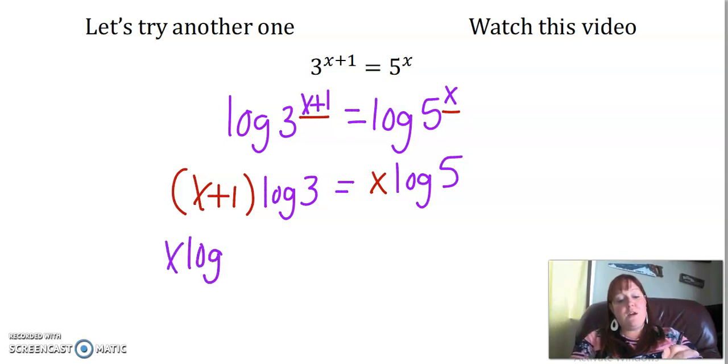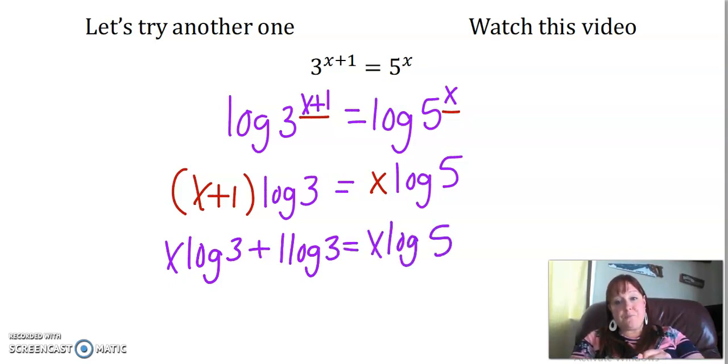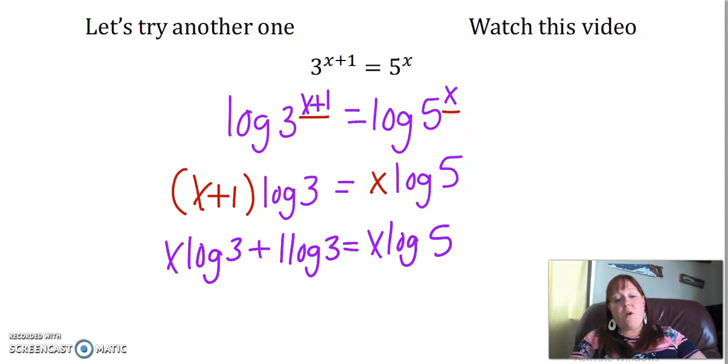So we have x log three plus one log three equals x log five. Now I'm just going to get rid of that one because it's really messy. It looks like LL. That's why our foreign exchange students write their ones differently because they say they always look like L's.